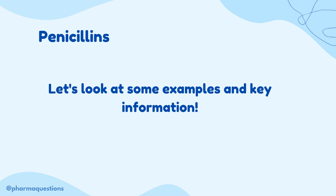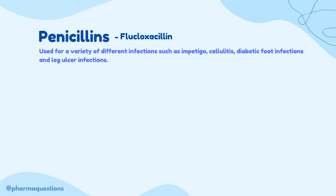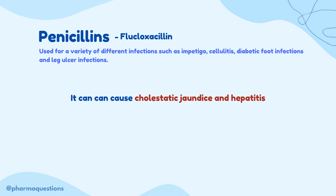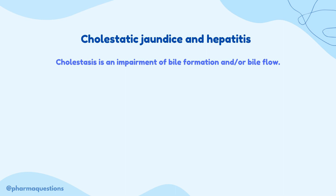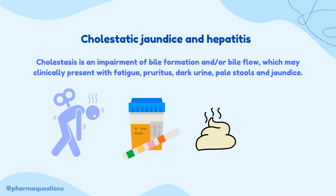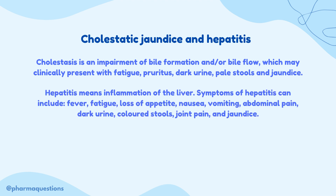Now let's take a look at some examples, starting with flucloxacillin. Flucloxacillin is used for a variety of infections such as impetigo, cellulitis, diabetic foot infections and leg ulcer infections. The most important thing to note with this penicillin is that it can cause cholestatic jaundice and hepatitis. Cholestasis is an impairment of bile formation and can present with fatigue, itchy skin, dark urine, pale stools and jaundice.